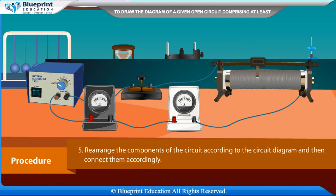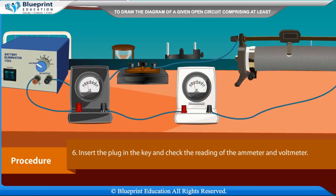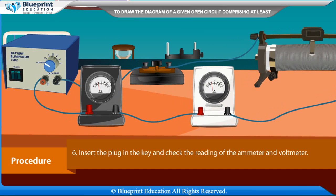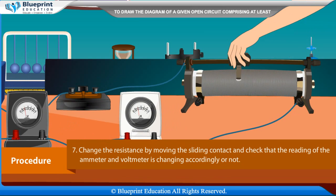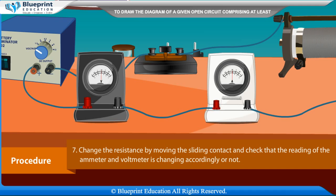Rearrange the components of the circuit according to the circuit diagram and then connect them accordingly. Insert the plug in the key and check the reading of the ammeter and voltmeter. Change the resistance by moving the sliding contact and check that the readings of the ammeter and voltmeter are changing accordingly.